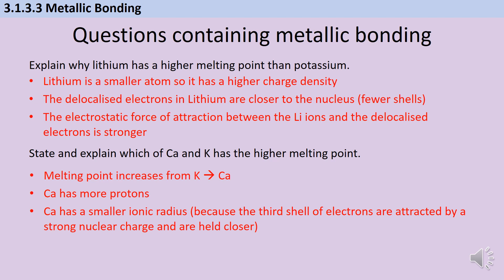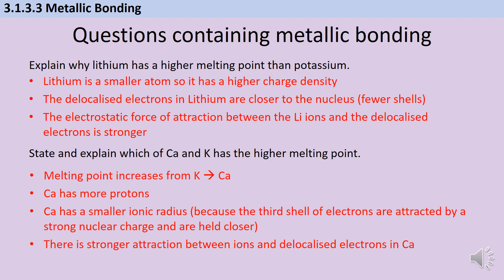That's going to mean that the ionic radius of calcium is ever so slightly smaller, because even though calcium and potassium have the same number of shells, that last shell in calcium is going to be pulled ever so slightly closer to the nucleus, because the nucleus has an extra proton to attract it in. Therefore, there's going to be a stronger attraction between the ions and the delocalised electrons in calcium. We can also talk about the fact that there's going to be more electrons in calcium which are going to be part of that bond.